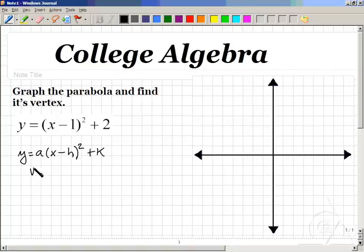Here we recall that the vertex is the ordered pair h comma k. And in this case, by comparing this, h is 1 and k is 2. So that means the vertex right away is the ordered pair 1 comma 2.